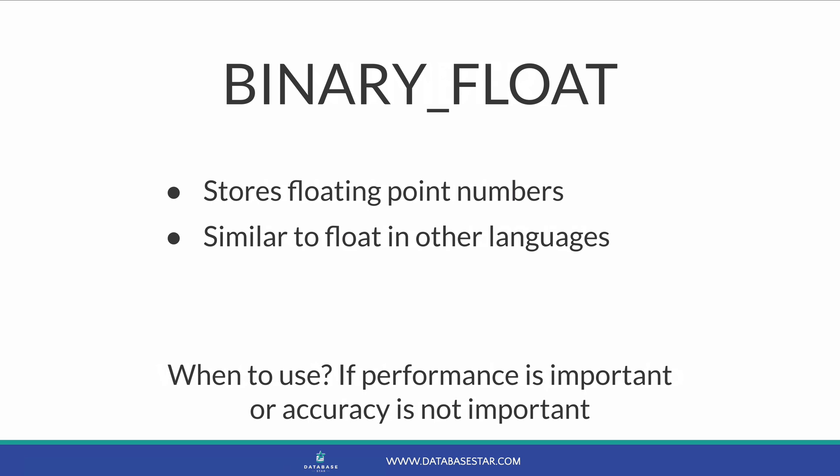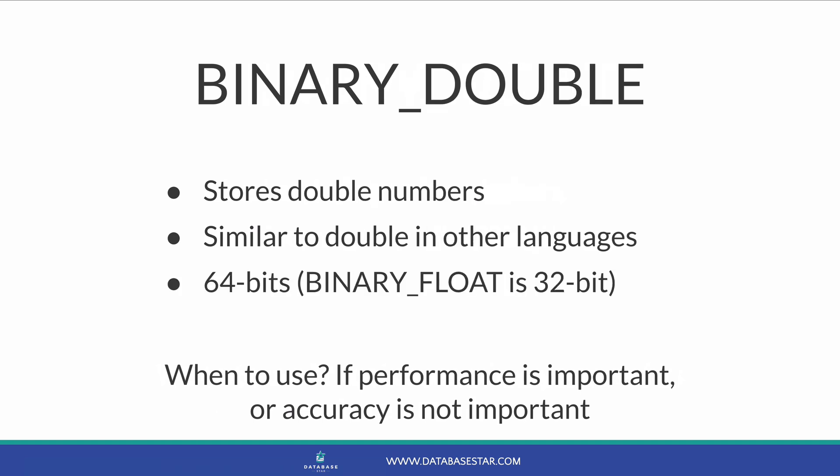The BINARY_FLOAT data type is used for storing floating point numbers. These are approximations of numbers using a different calculation to store, similar to a float in other languages. You should use BINARY_FLOAT if performance is important or if you need to store a large floating point number and aren't concerned with accuracy. BINARY_DOUBLE is another data type that stores decimal numbers, similar to BINARY_FLOAT but 64-bit versus 32-bit. Use BINARY_DOUBLE when performance is important and your number is too large for BINARY_FLOAT.